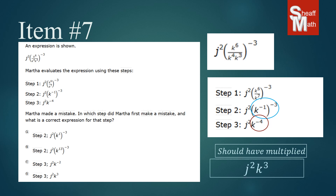So she should have had j squared k to the third as her final answer. If you look at the possible answers, you can see answer D: she made the mistake in step three, and it should be j squared k to the third. That's the answer to this problem.